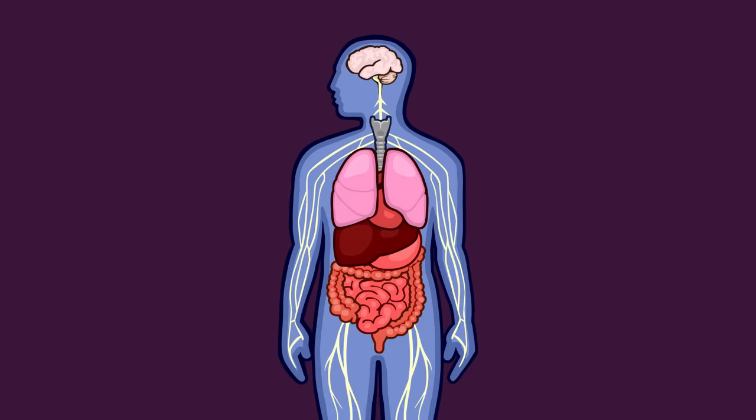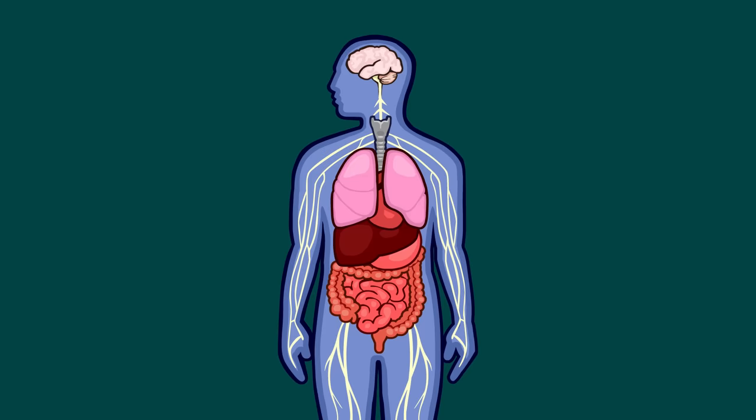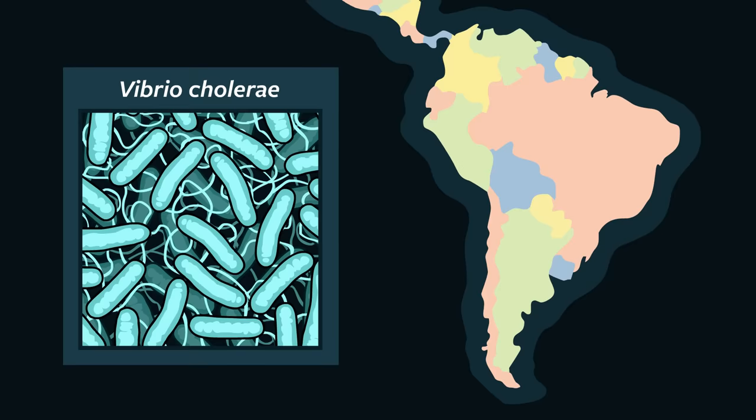For example, many of the bacteria living in your intestines actually help you digest your food. They eat the parts of it that you can't absorb, and then excrete waste products that you can absorb. Most of the microbes living inside us today either have a mutualistic or commensalistic relationship with us, but some of them started out as parasites.